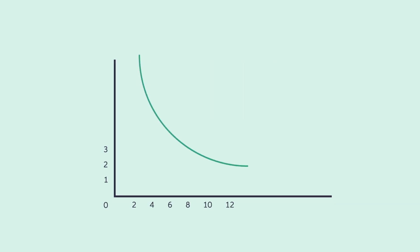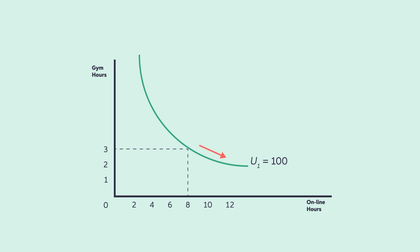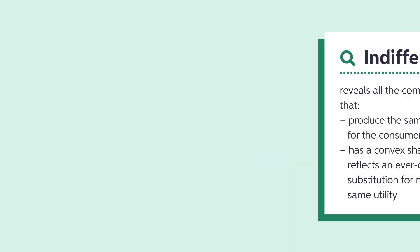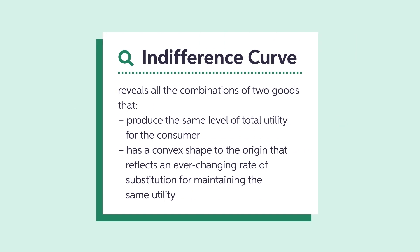Indifference curves show the combination of two goods that produce the same utility level. Assume that Weston currently spends three hours at the gym each week and eight hours online each week, for a utility level of 100 from both goods. He could maintain that utility level by trading up the curve, sacrificing more hours online for more hours at the gym, or trade down the curve for less hours at the gym and more hours online. Note that the slope of the indifference curve is not constant — to retain the same level of utility, an increasing quantity of one good must be added for the same quantity to decrease in the other good. This creates indifference curves with a convex shape to the origin.